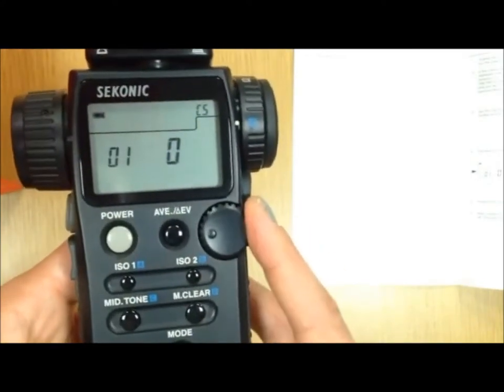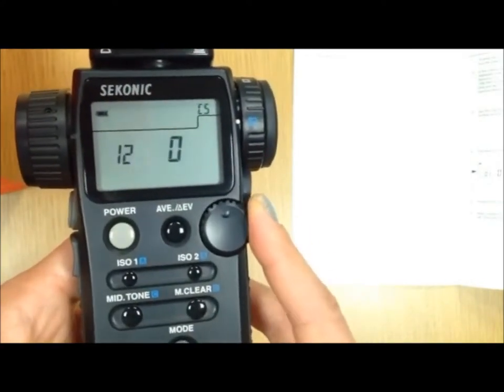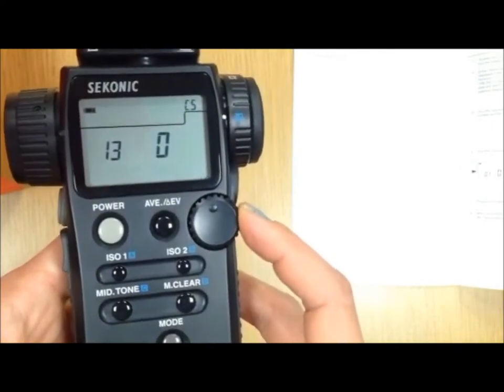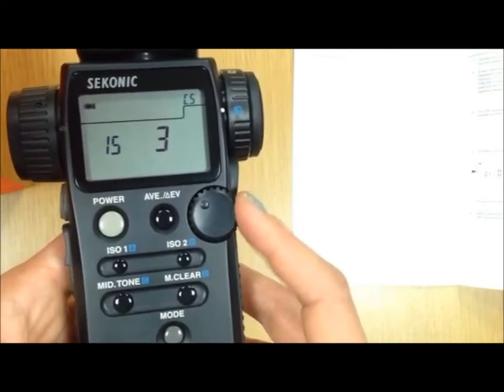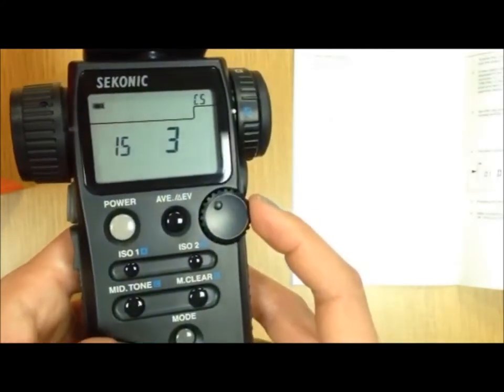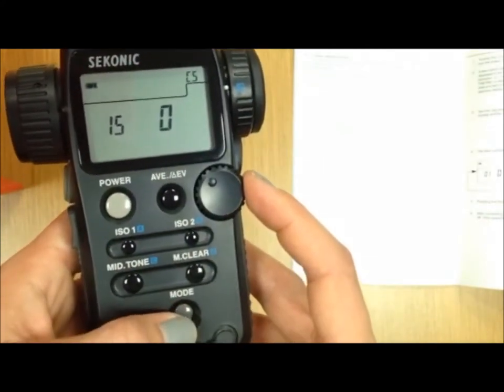The click wheel will allow you to scroll through the custom setting numbers. And like I told you, the two we are interested in are 15 and 16. And the item numbers for both of these are zero.